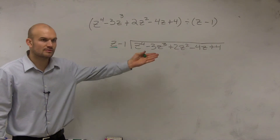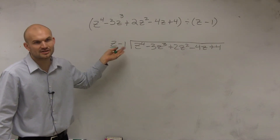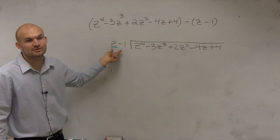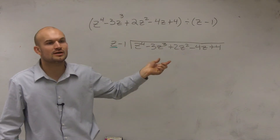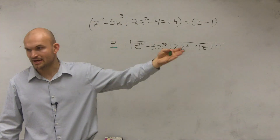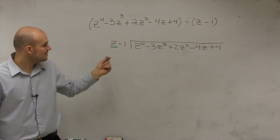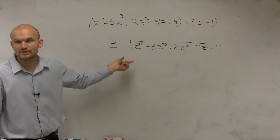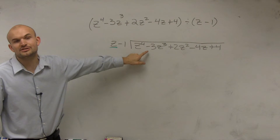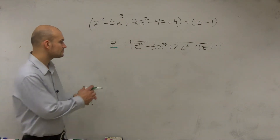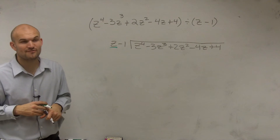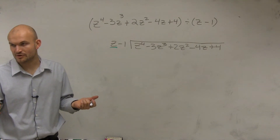Make sure your polynomial — your divisor — is in descending order, meaning the leading term has the highest degree. You have to have the largest degree first, then that will be your leading term. So we're simply going to take our leading term and use that as your divisor into your dividend. z divides into z to the fourth, z cubed times.